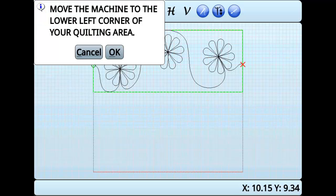We need to tell Butler where the bottom line of our quilt area is. The on-screen instructions will prompt you to move the machine to the lower left corner of the quilt area and then press OK.